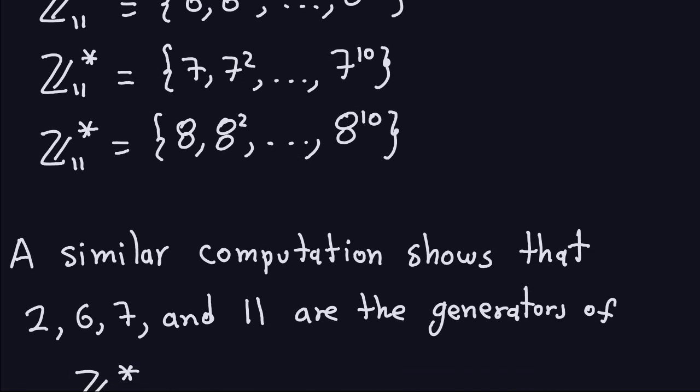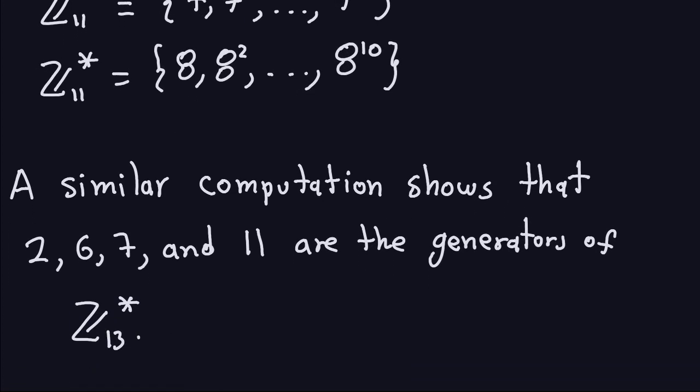If you want to practice, try finding all the generators of Z13*. The answer is that the generators are 2, 6, 7, and 11. Different groups have different generators — for example, 8 was a generator of Z11* but is not a generator of Z13*. As I mentioned earlier, the concept of a generator is strongly related to the discrete logarithm problem, so in the next video I will finally be able to define what the discrete logarithm problem is. See you in the next video.